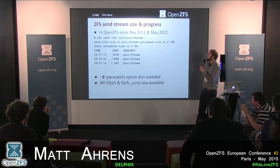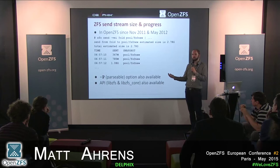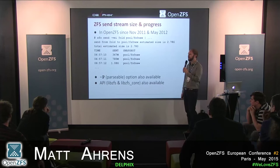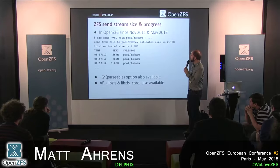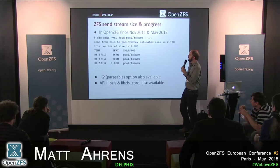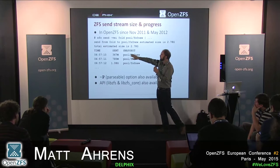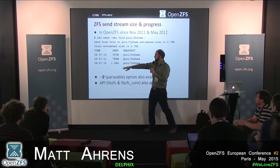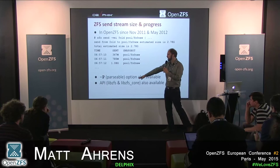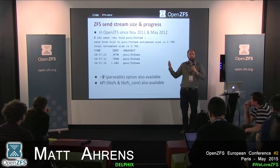Send stream size estimation and progress monitoring has been in for a while. If you do ZFS send -V, it tells you the estimated size — e.g., 2.78 gigabytes. For ZFS send -R it gives an estimate per snapshot plus a total. It prints progress every second showing how much has been sent and which snapshot it's working on. With the -P (parsable) option, output is in a machine-readable format you can hook into a GUI showing percentage done.